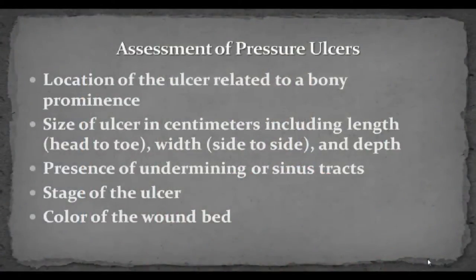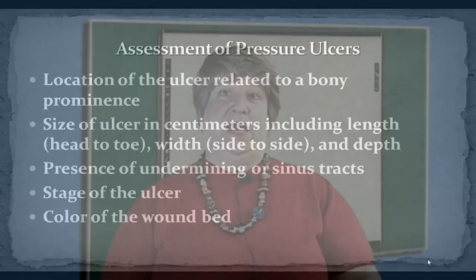When assessing pressure ulcers, it is very important to document the location of the ulcer in relation to a bony prominence, and measure the size in millimeters or centimeters — this is critical for baseline documentation. In long-term care, reassess at least once a week. Determine if there is any undermining or sinus tracts, note the stage of the ulcer, and document the color of the wound bed.